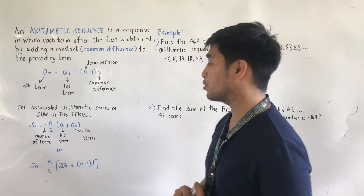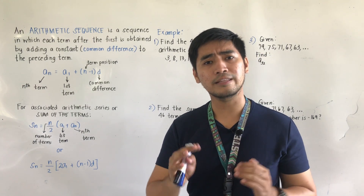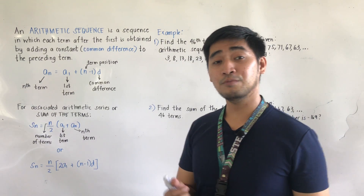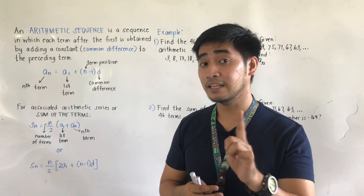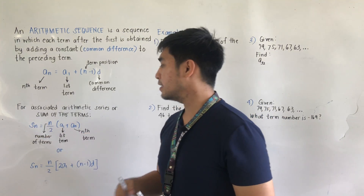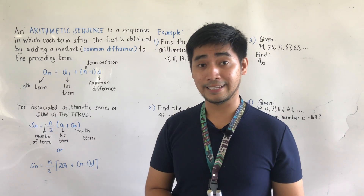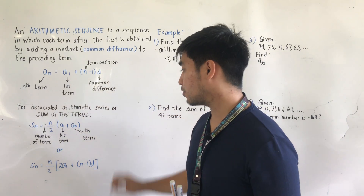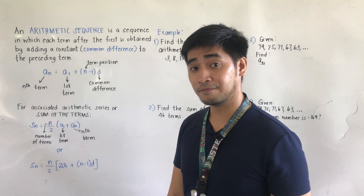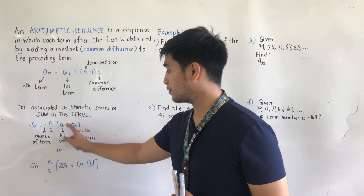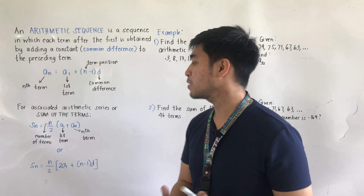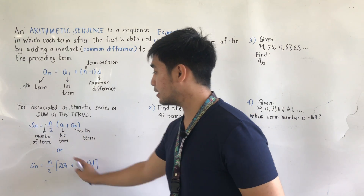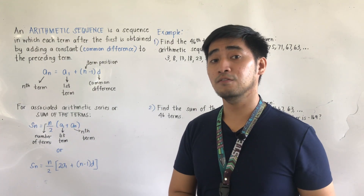For the associated series, or the sum of the terms, we use the formula: S_n = (n/2) × (a_1 + a_n), where n is the number of terms, a_1 is the first term, and a_n is the nth term — in this case we can call it the last term.